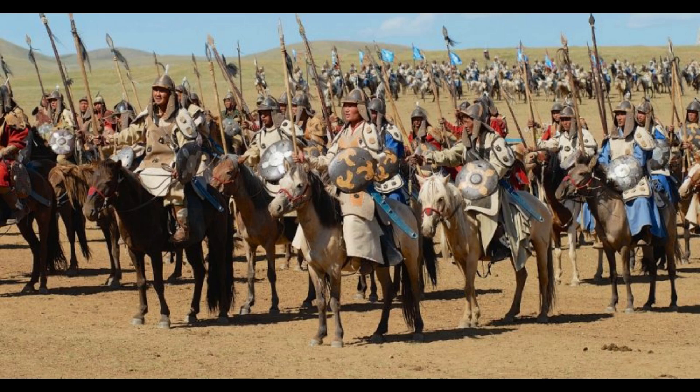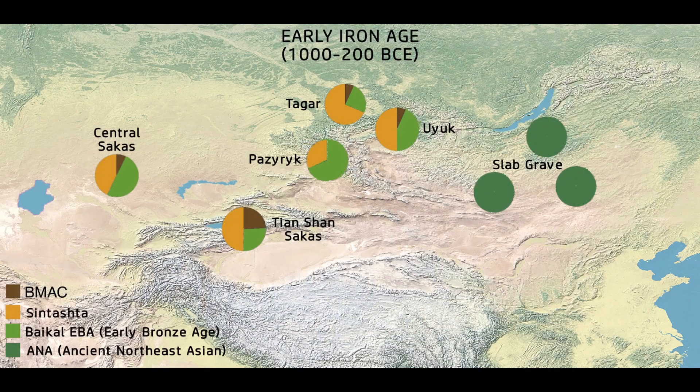The ethnic genesis of the Mongol nation mostly comes down to three ancestral components: Slab grave, Baikal Bronze Age, and Indo-European. In this video, I will show you the DNA results, predicted appearance, illnesses, and GED match results of three medieval Mongol samples.